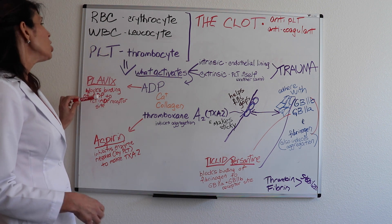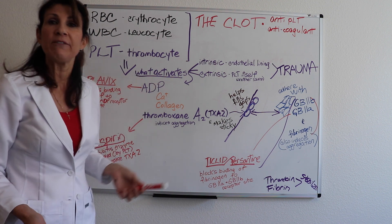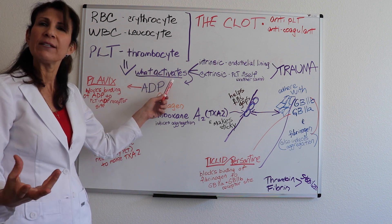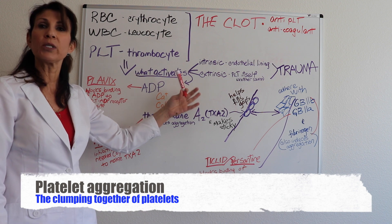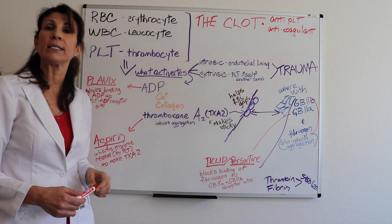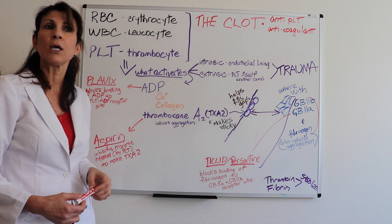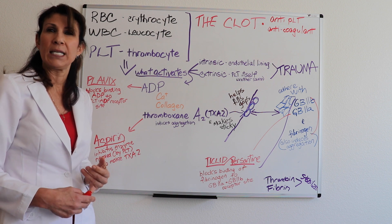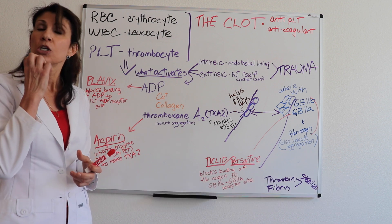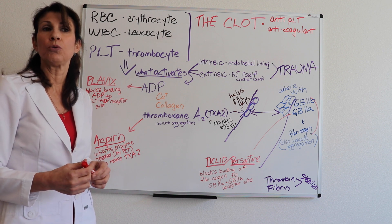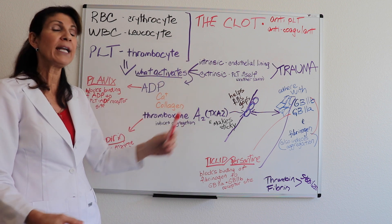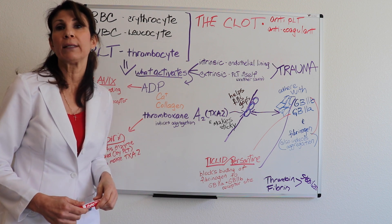The platelet is activated and is the first responder when there's going to be a clot. What activates or aggregates these platelets? There are two potential sources: the intrinsic and the extrinsic factor. The intrinsic source is from the endothelial lining itself — toxins, ischemia, uric acid, anything that injures the endothelial lining can trigger platelet aggregation. Any kind of external trauma also triggers platelet activation.